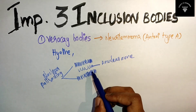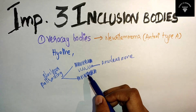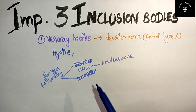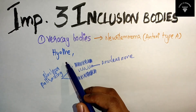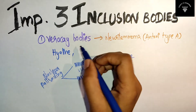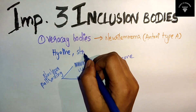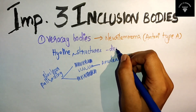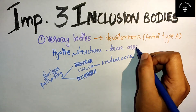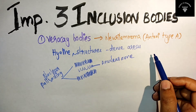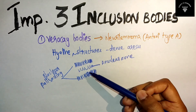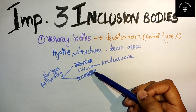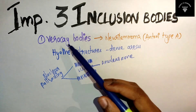Verocay bodies are composed of two rows of nuclear palisading with an anuclear zone in between. These alternating zones form the Verocay bodies, which are hyaline structures forming the dense areas of the neurilemoma. The two nuclear palisading regions and the anuclear zone together make up the Verocay bodies.